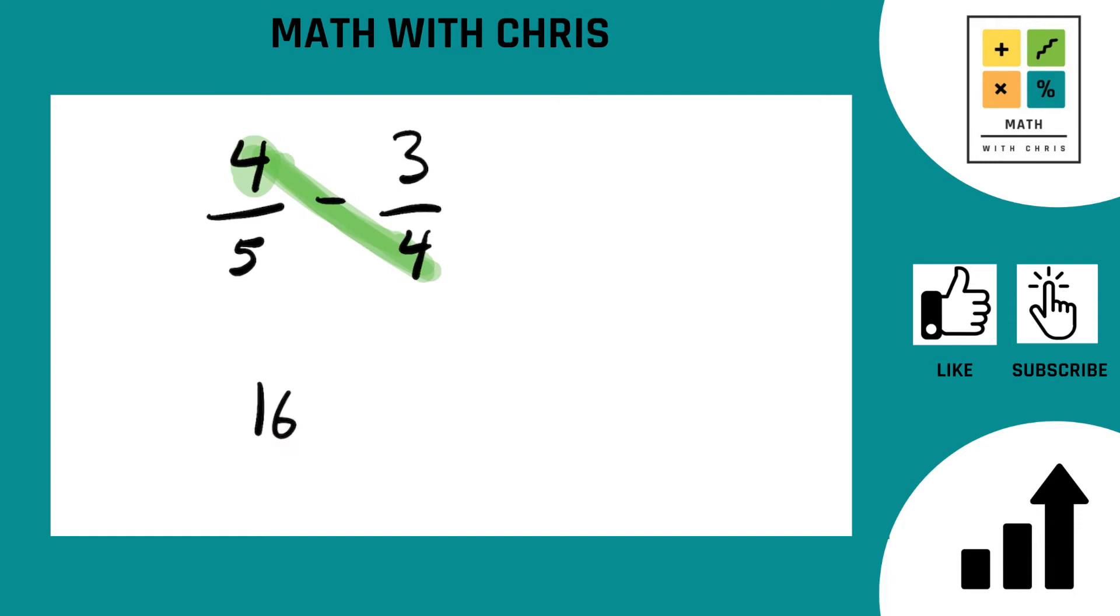And then we cross-multiply the other way, start with the 5, cross-multiply up to the 3, that gives us 15. That's just like when you add fractions, the only difference is instead of putting a plus here you just put a minus.